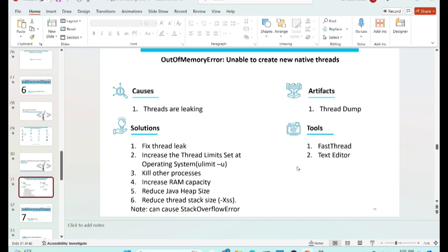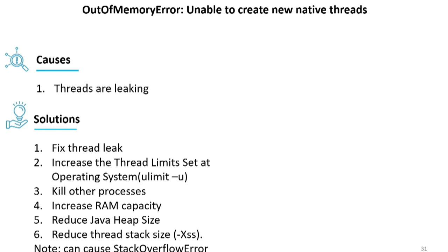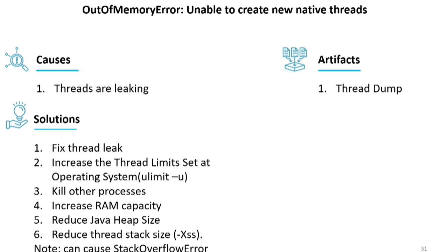Quick recap on this out-of-memory error — unable to create new native threads: this happens when there is a thread leak. First, take a thread dump and see if a thread leak is happening, then fix it. This problem can also happen even without a thread leak — every kernel sets a limit on the number of threads each Java process can create, perhaps 512 or 256. When you go beyond that limit, this error gets thrown even if your application legitimately needs more threads. In that case, increase the kernel limit. The key takeaway: to troubleshoot this OOM error, use a thread dump — not a heap dump. Use FastThread or a text editor to analyze it.